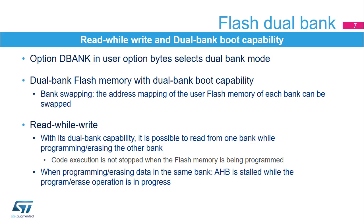The dual bank or D-bank option is used to select either single bank or dual bank mode. The flash memory can be configured to support two banks with read while write and dual bank boot capability, able to boot from either bank 1 or bank 2. The swap bank option in the user option bytes is used to swap bank 1 and bank 2 addresses. By enabling the dual bank mode, read while write is supported, permitting a read operation on one bank while an erase or program operation is performed on the other bank. A protection mechanism prevents masters accessing a bank while a program or erase operation is in progress in that bank.